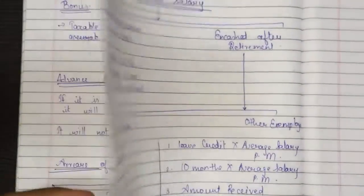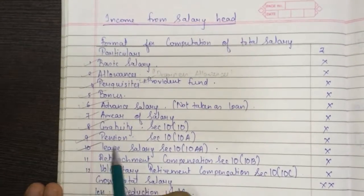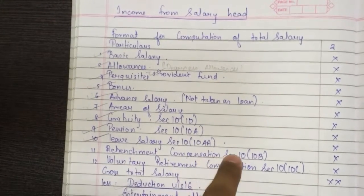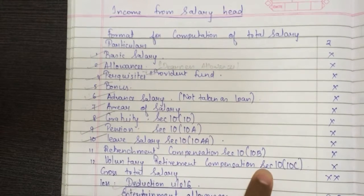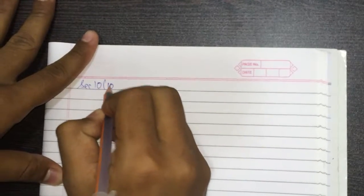In the previous video we completed leave salary, so let's strike it off. It gives a lot of pleasure to strike it off because now only two topics are remaining. In this video we will complete retrenchment compensation under Section 10(10B) as well as voluntary retirement compensation under Section 10(10C). This will be the last theory video on salary, unless any amendments or additional content are needed.